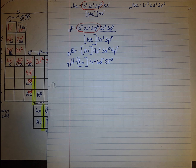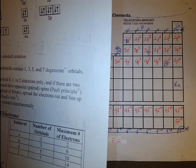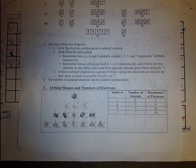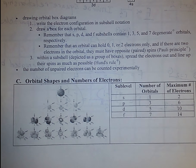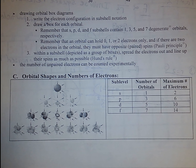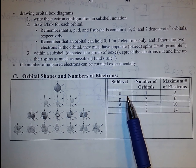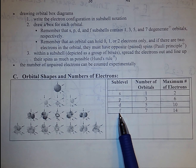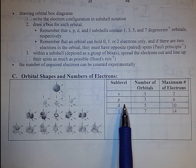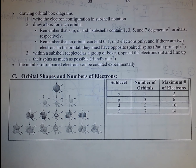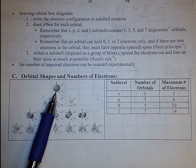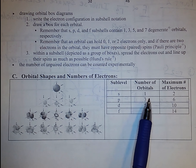Now let's talk about orbital notation. You have 4 orbitals or sublevels: s, p, d, and f. Each one of these orbitals, when put up against an x, y, or z axis, has different orientations. The s orbital only has one orientation or one orbital when placed against the xyz axes.